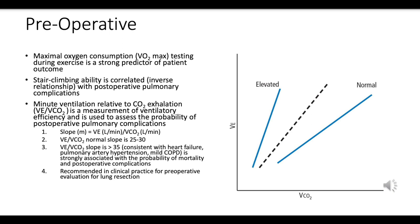A VE to VCO2 slope greater than 35 is associated with conditions such as heart failure, pulmonary artery hypertension, and mild COPD, and is strongly correlated with an increased probability of mortality and postoperative complications. Elevated VE/VCO2 values indicate decreased ventilatory efficiency, suggesting the lungs are working harder to expel the same amount of carbon dioxide, potentially indicating underlying pulmonary or cardiovascular conditions.